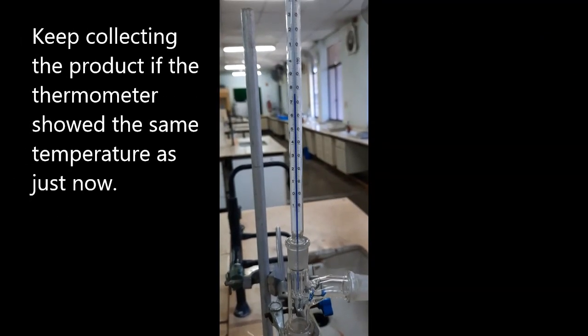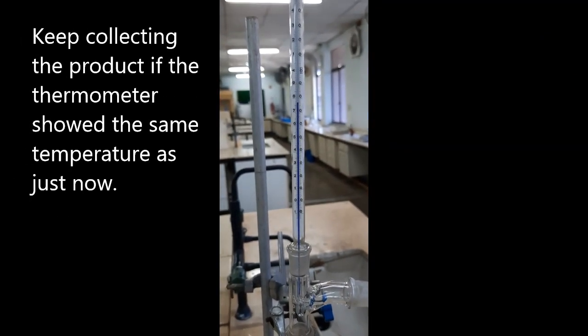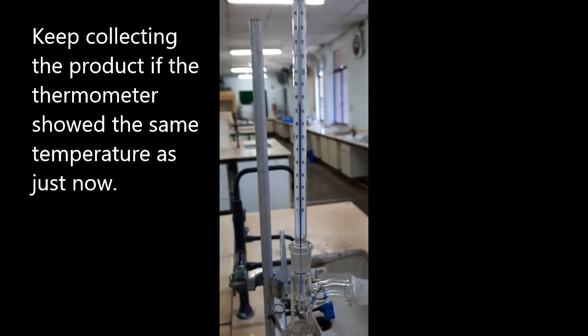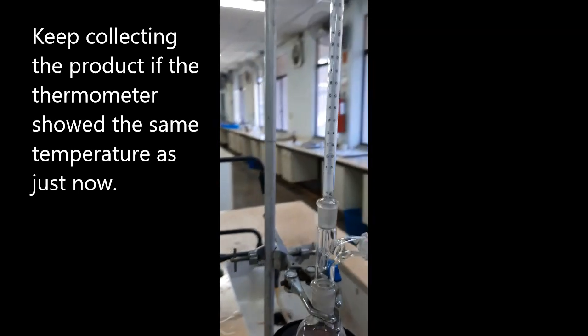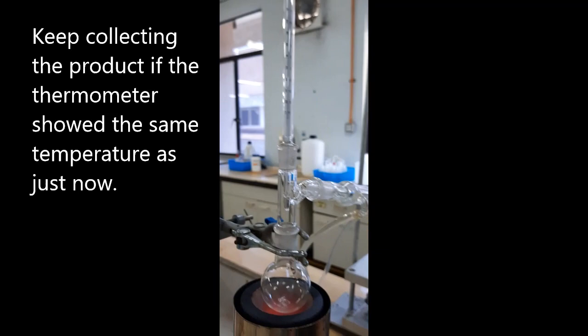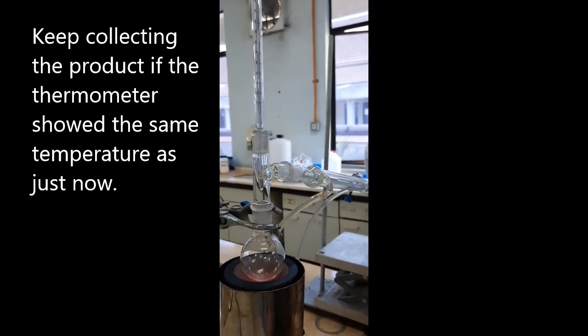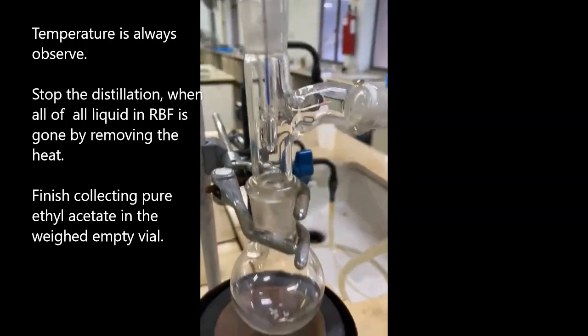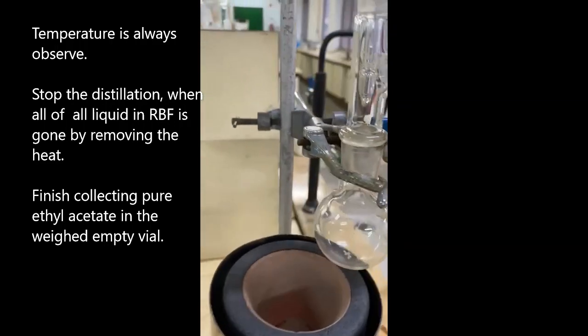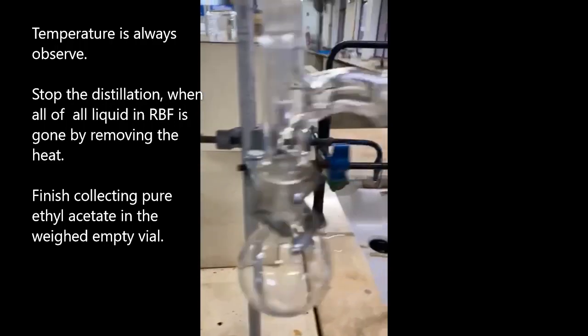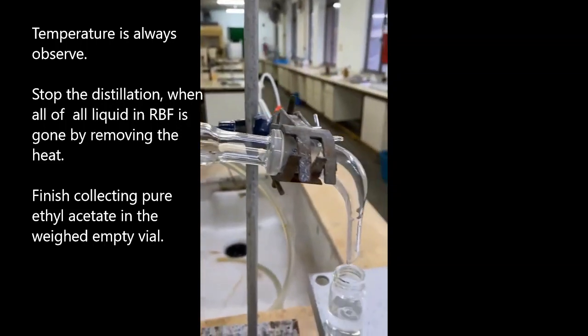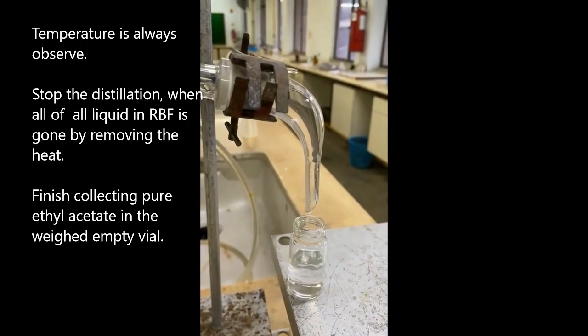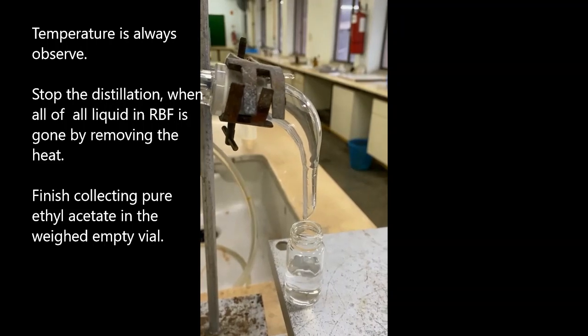Continue to collect the product, leaving the condenser at this constant temperature. Stop the distillation when the round bottom flask is empty. Make sure to collect all liquids leaving the condenser in the weighed vial.